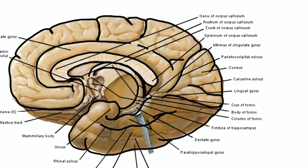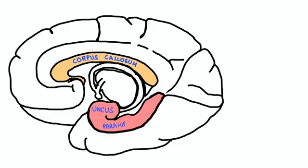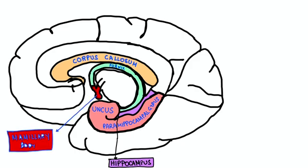Let's see the sagittal section, meaning dividing the brain into left and right halves and seeing the medial surface of the brain. This is the corpus callosum which will be connecting the left and right cerebral hemispheres. Next is medial temporal lobe which consists of uncus, parahippocampal gyrus, hippocampus from there to fornix, mammillary body.